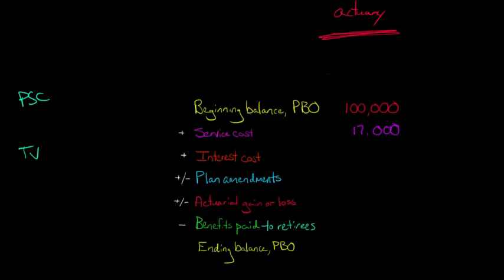And then the interest cost is going to be calculated based on the beginning balance of the PBO. Let's say it was something like 3.5%, so it ends up with an interest cost of $3,500. And plan amendments, there doesn't have to be any, this could be zero. But let's say that during that year, this firm granted prior service cost that's worth an additional $5,000 to its employees. So it's basically increasing its obligation, giving them extra retirement benefits.